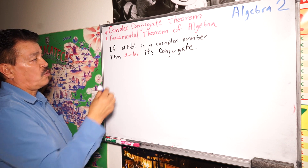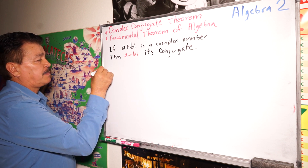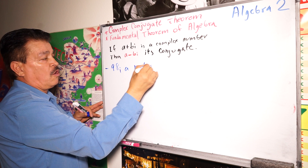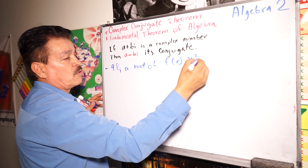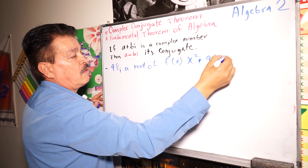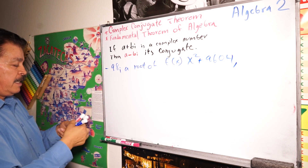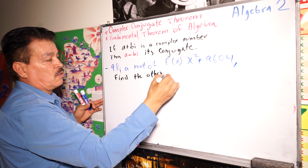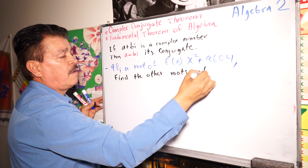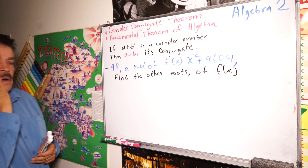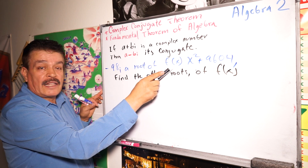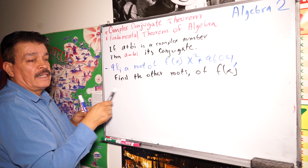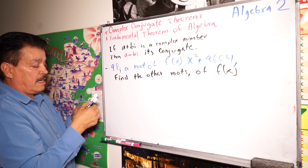We have one problem to show how that works. For instance, 98i is a root of f(x) = x squared plus 9604. Find the other roots of f(x). So if f(x) has real coefficients, then the complex conjugate of negative 98i is 98i — positive.